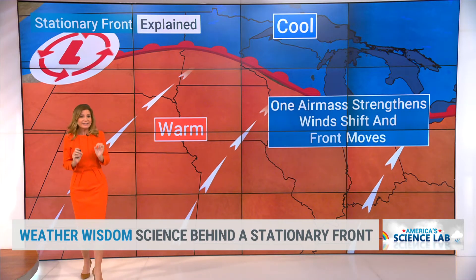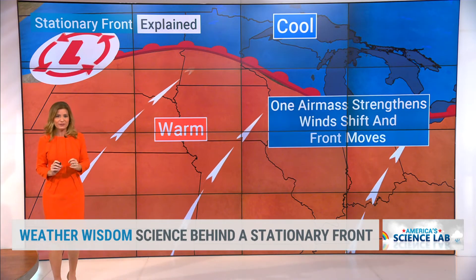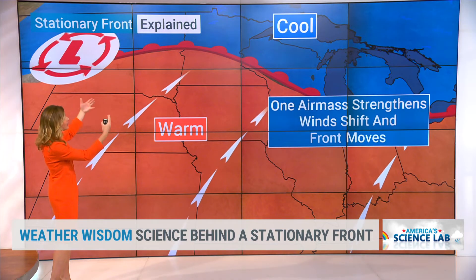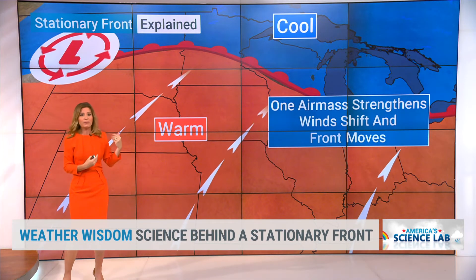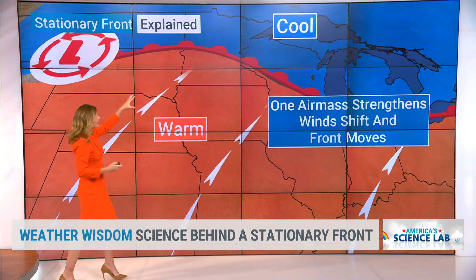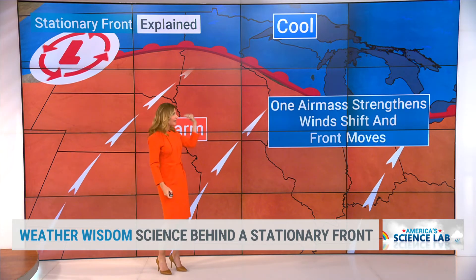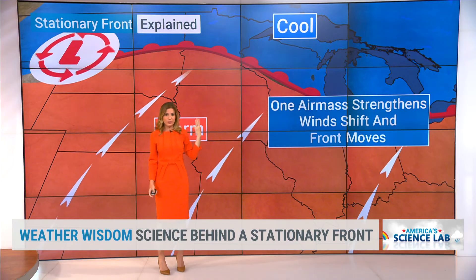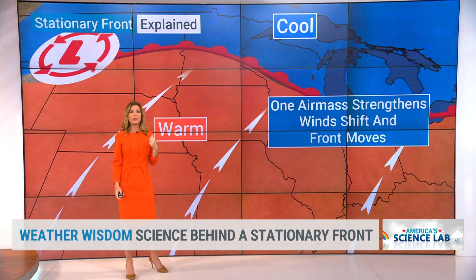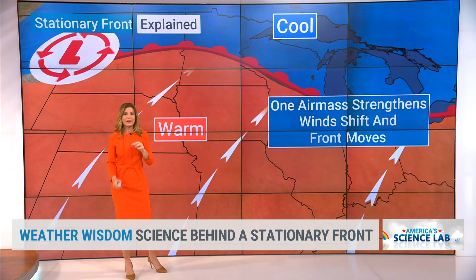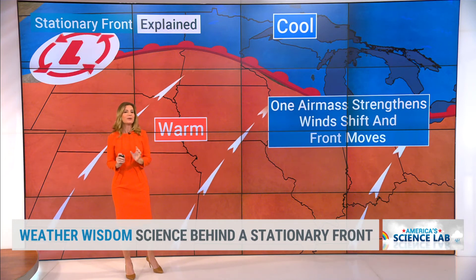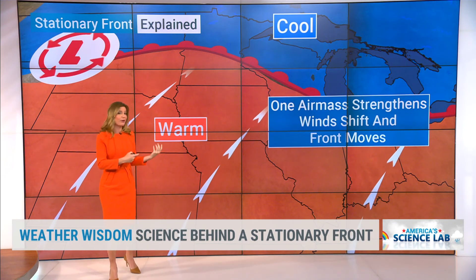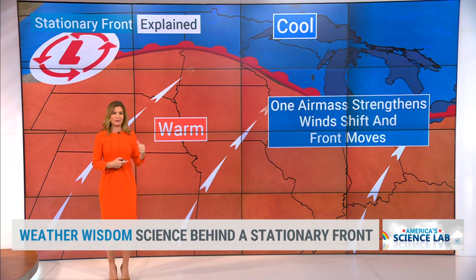That doesn't happen until you get a wave of low pressure along the front. Then you start to get circulation, and warm air can overtake or override cooler air to the north. The cool air is retreating, which allows the warm air to come in. You start to see that front on the move — the warm front pushing north. On the flip side, you have the cold front surging in as well as that cold air makes a move. It's all about the movement of air, just how strong the air mass is, and of course, if there's a wave of low pressure.